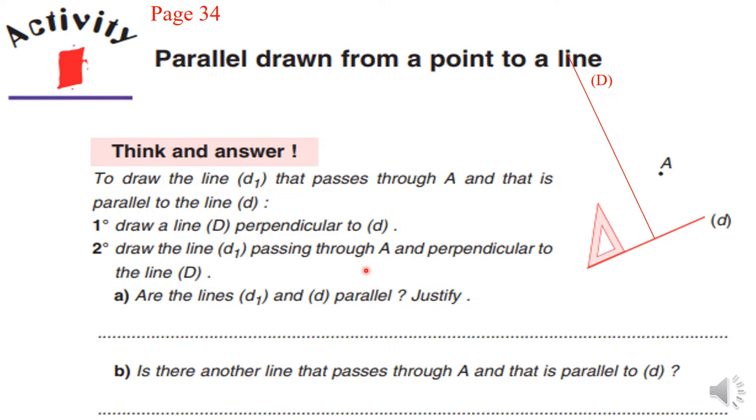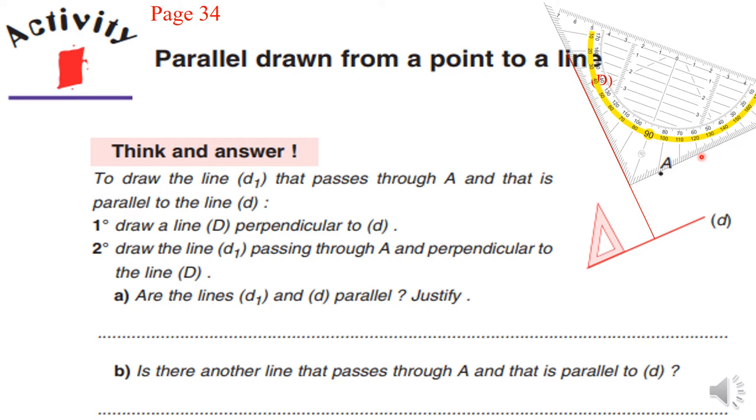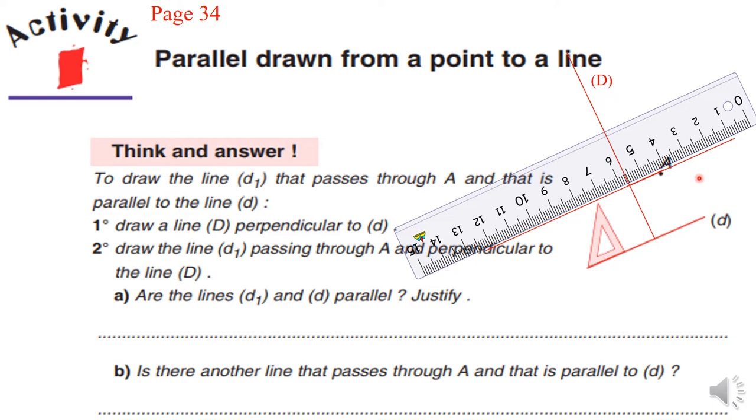Then, draw the line (d1) passing through A and perpendicular to the line (D) that I made. Now, we have to put our set square in the front of the line D, capital D, okay? Let's put it. And the second side of the set square in front of the point A. Excellent. Now, we have to make the first part of the parallel line. So, we elongate it.